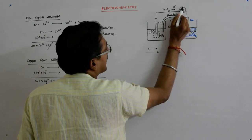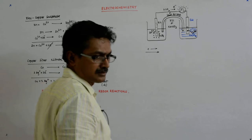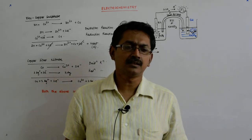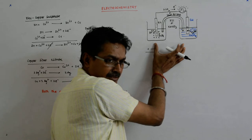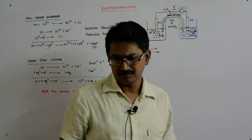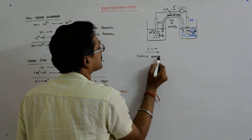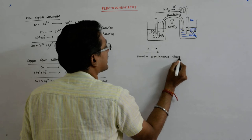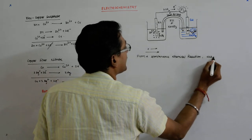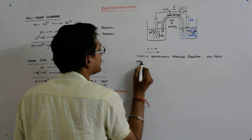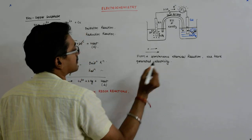So in effect, what have we done? From a reaction that was spontaneous, we have generated electricity. From a spontaneous chemical reaction, we have generated electricity.